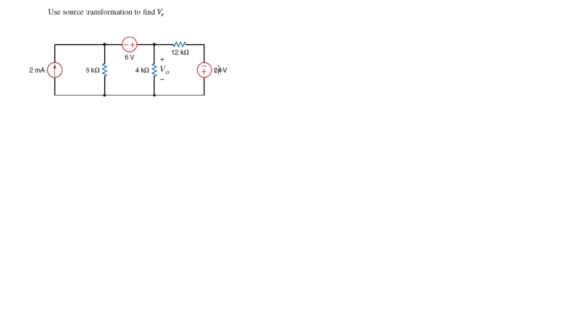Now, when you're changing a voltage source into a current source, the resistor has to be in series and then gets moved into parallel with the new current source.